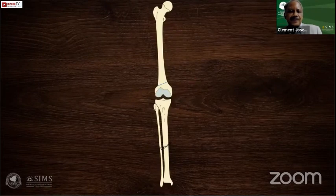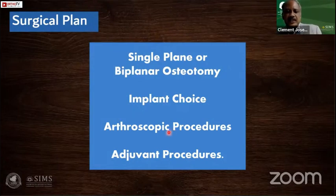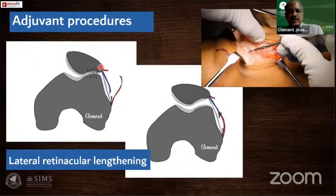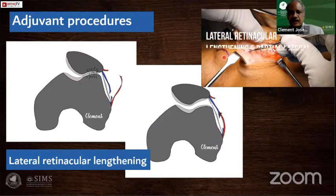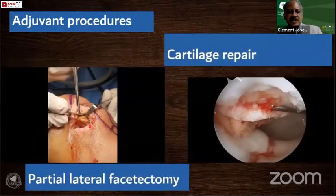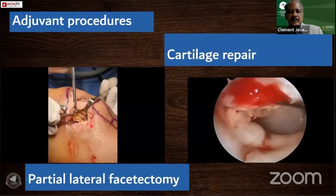The surgical plan — which Dr. Kumar will explain — could be single-plane or biplane, with carefully chosen implants. It is very important to consider arthroscopic procedures if the patient has chondral defects or meniscal tears. These patients may also need adjuvant patellofemoral procedures. For example, patients with significant patellofemoral pain may need lateral retinacular lengthening to relieve lateral pressure syndrome. In some cases with a very painful osteophyte, a partial lateral facetectomy can remove the osteophyte along with part of the lateral patellar pressure.